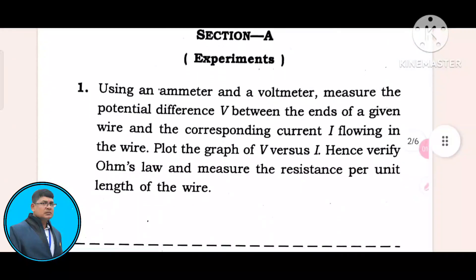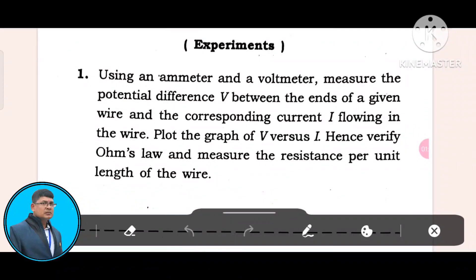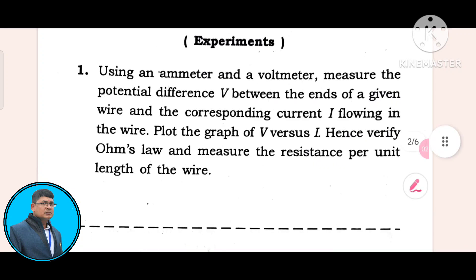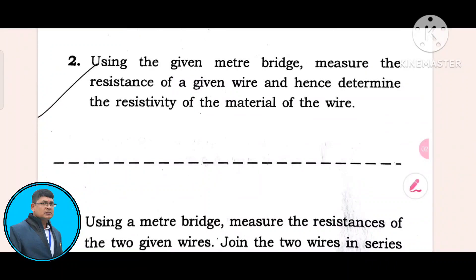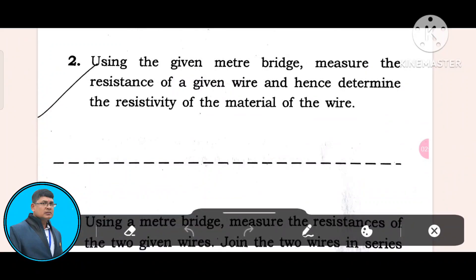Look at this — Section A. Experiment one: Using an ammeter and a voltmeter, measure the potential difference V between the ends of a given wire and the corresponding current I flowing in the wire. Plot the graph of V versus I and verify Ohm's law and measure the resistance per unit length of the wire. Experiment two: Using the given meter bridge, measure the resistance of a given wire and hence determine the resistivity of the material of the wire.